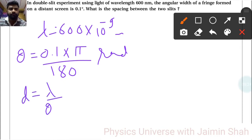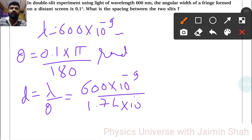That is the direct formula for spacing between two slits. So λ = 600×10^-9, and here 0.1×3.14/180, so that is 1.74×10^-3.